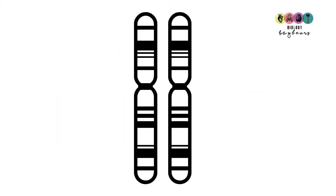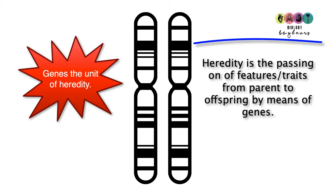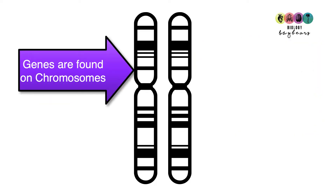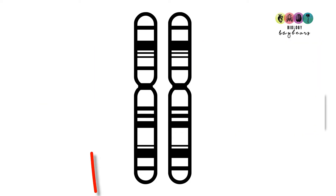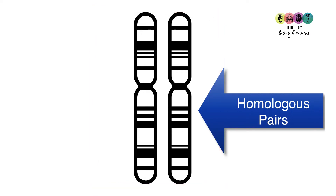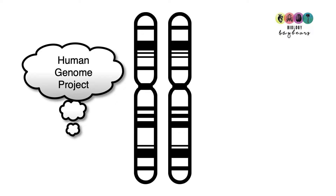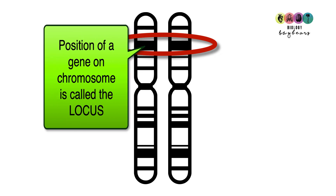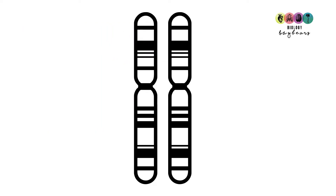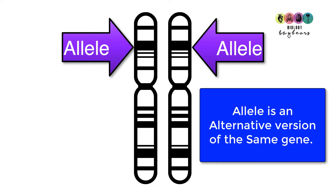A gene is the unit of heredity, and heredity is the passing on of features or traits from parent to offspring by means of genes. You find genes on chromosomes, and our chromosomes occur in homologous pairs. Thanks to the Human Genome Project, scientists now know the exact location of genes on specific chromosome pairs, and the position of a gene on the chromosome is known as the locus. On this chromosome pair there is one copy of a gene on each chromosome, and that's called the allele.